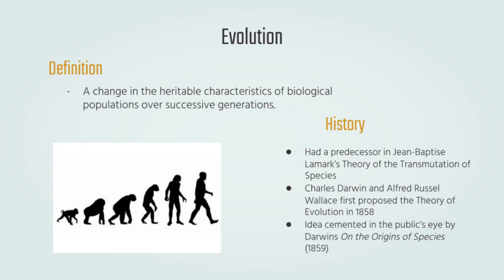Before we take a look at how game theory is able to simulate evolution in real life, let's first figure out what evolution is. Evolution is a change in characteristics of a species over time. Take for example the Galapagos finches. They were originally from the same species, but because of separation due to geographical boundaries, some began to grow short and strong beaks, whereas others grew slim and slender ones in response to their environment. This is an example of evolution in action.